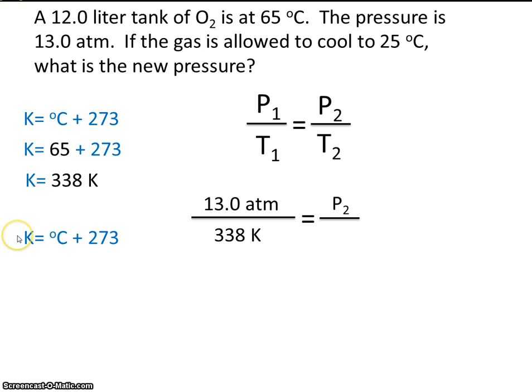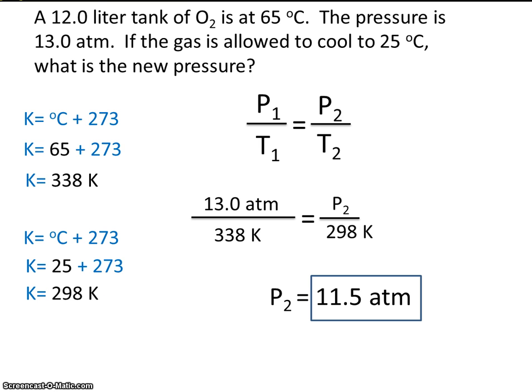For T2, we'll use the same equation. We're cooling the sample to 25 degrees C, so the final temperature is 298 K. When we solve for P2, we get a final answer of 11.5 atmospheres.